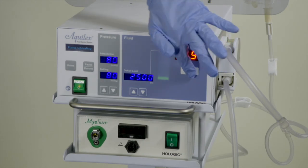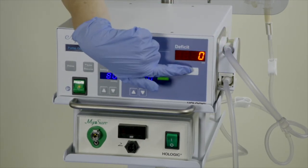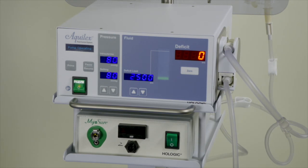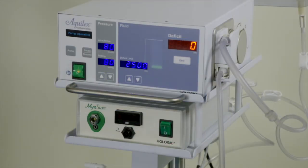Press and hold the zero deficit button on the Aqualex pump. This will zero the fluid deficit used during the priming. You will hear an audible sound and the numbers on the screen will reset to zero. You are now set up and ready to begin.